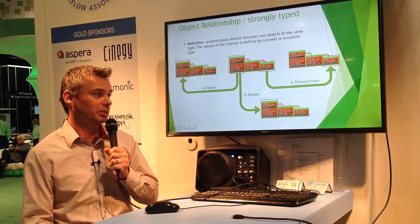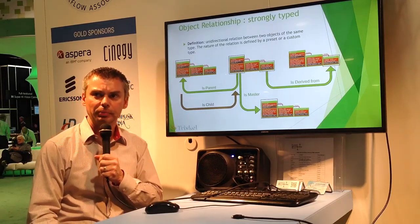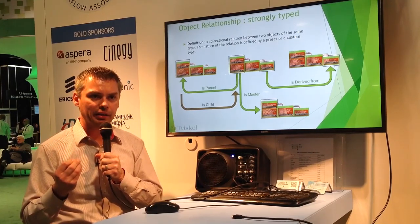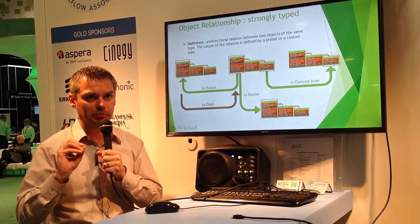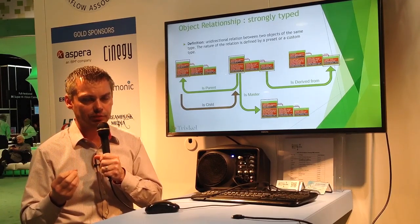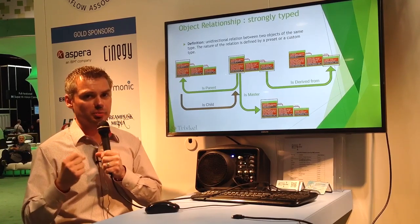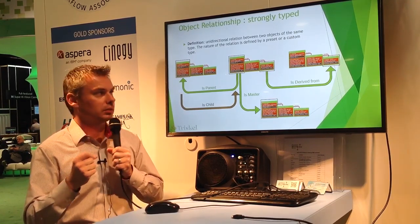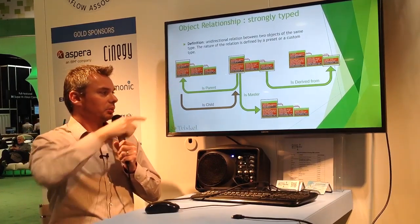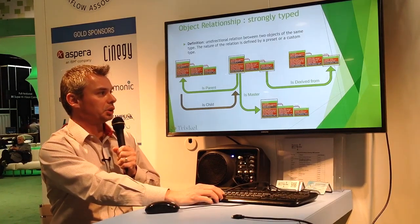When you define a relationship, you also have the ability to specify the inverted relationship, and that inverted relationship can be created automatically depending on the capability of the repository. So in the scenario of an is-parent relationship, if object A is a parent of object B, it means that object B is a child of object A. That's an example of an inverted relationship.